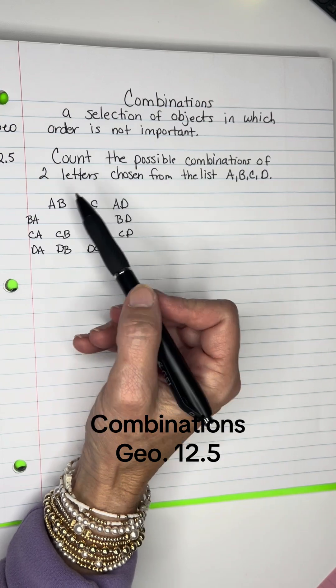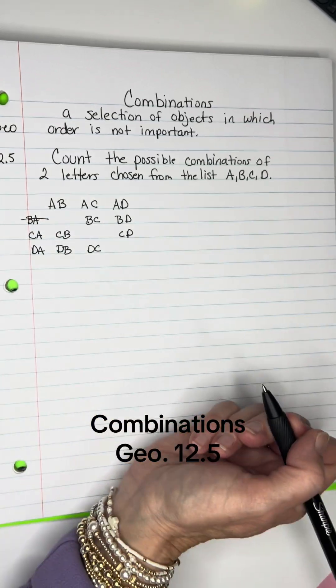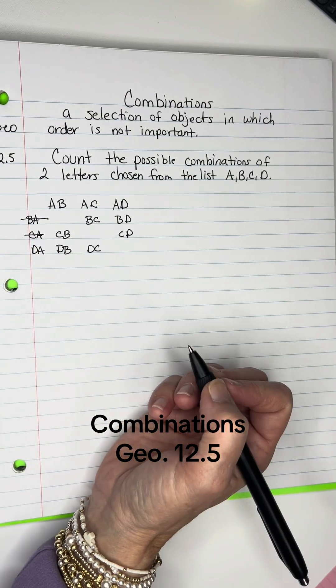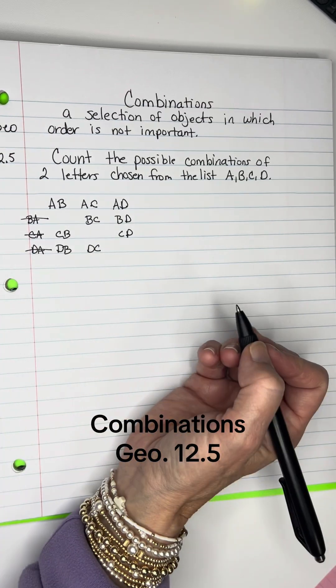What are the duplicates? Since order is not important, AB and BA is the same thing, so I'm going to mark one of those off. AC is the same thing as CA, so I'll mark one of those off. AD is the same as DA, so I'll mark one of those off.